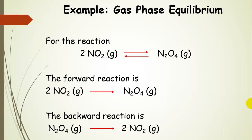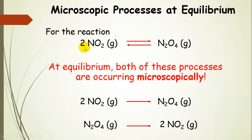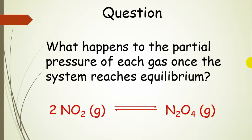Now let's look at another system: a reversible reaction where nitrogen dioxide forms a dimer, dinitrogen tetroxide. The forward reaction is 2 NO₂ dimerizing to form N₂O₄, and the reverse has N₂O₄ splitting apart into NO₂ molecules. Even though this system is at equilibrium, the rates of each process — the dimerizing and the splitting apart — are equal. Things are occurring; we're continuously forming the dimer and splitting apart, even though it looks like nothing is happening. What happens to the partial pressure of each gas once this system reaches equilibrium?